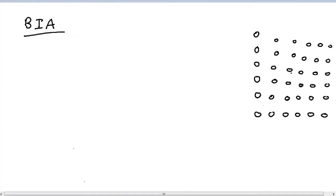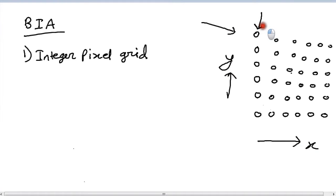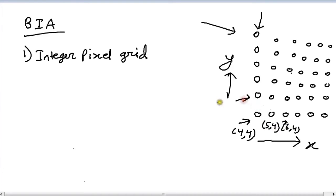The first condition is that the pixel grid has to be an integer pixel grid. This means we can identify each and every single pixel through an integer value of x and an integer value of y. For example, if a pixel is at coordinate (4, 4), the next pixel to the right would be (5, 4), then (6, 4), and going vertically upward we'd have (4, 5), (4, 6), and so on.